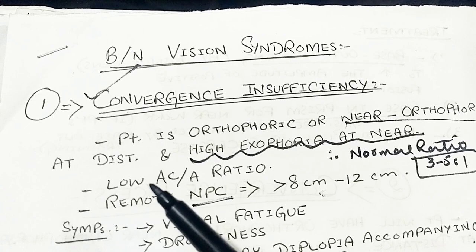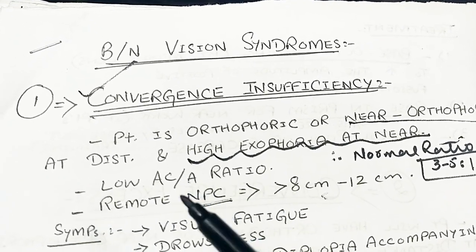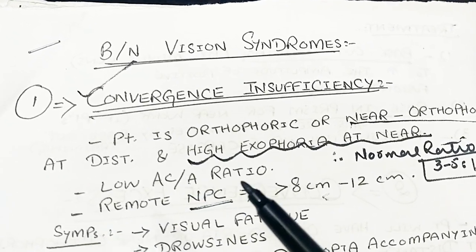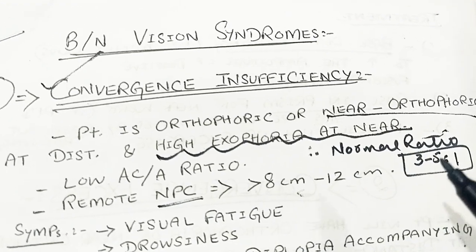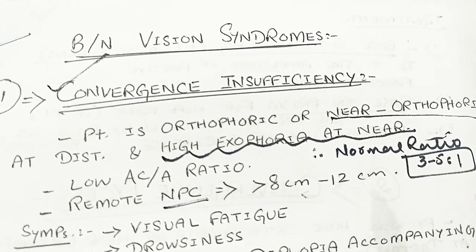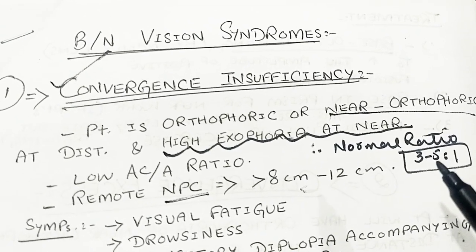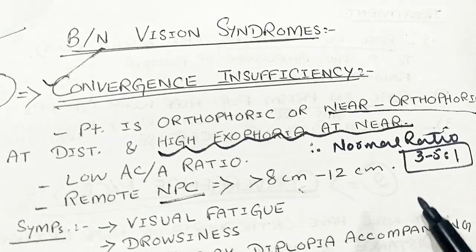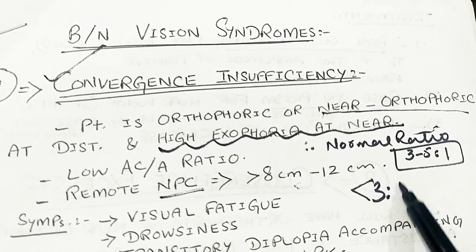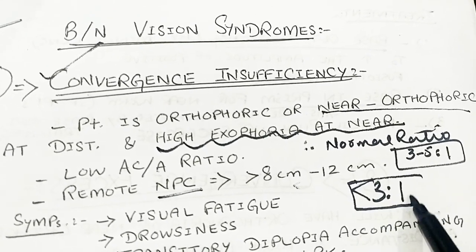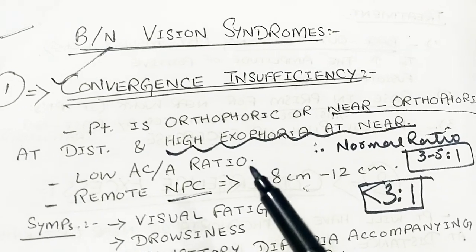The patient is also having a low AC/A ratio — that is, accommodative convergence to accommodation ratio is low. The normal ratio is 3 to 5 is to 1. In convergence insufficiency, the patient has less than 3 to 1 ratio, meaning a low AC/A ratio.